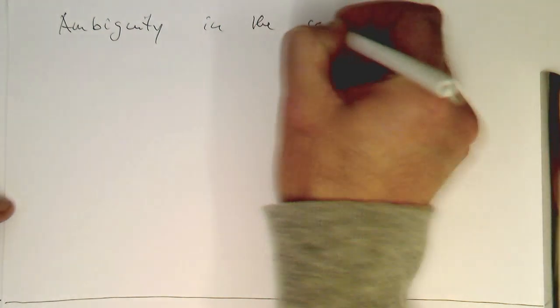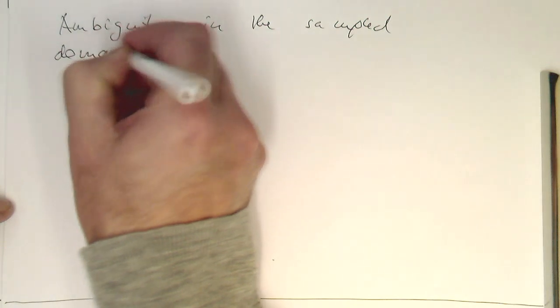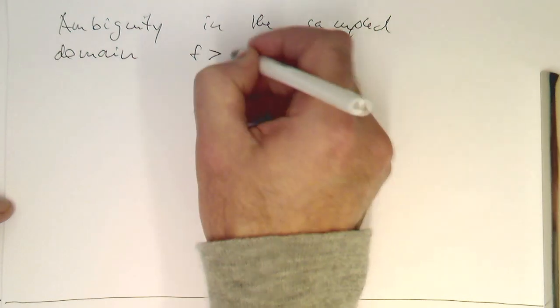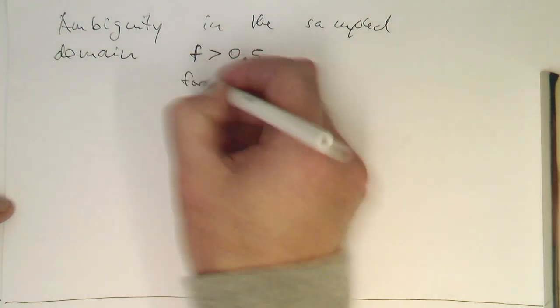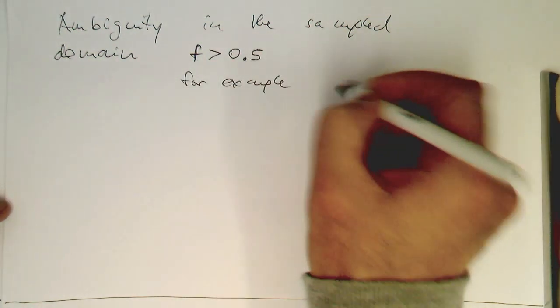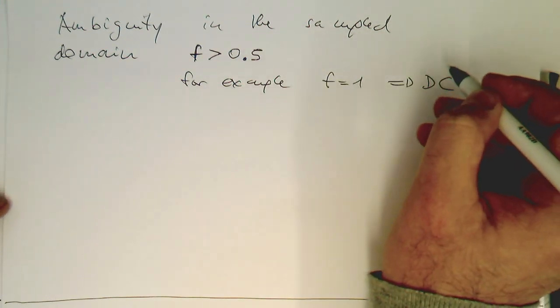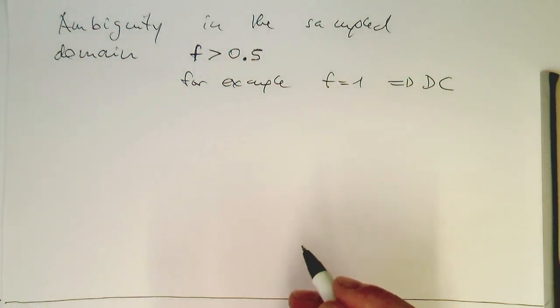Okay, so we've got the ambiguity in the sample domain as soon as f is greater than 0.5 and for example, at f equals 1, we are getting DC again out there. So that's the ambiguity we are generating in the sample domain.